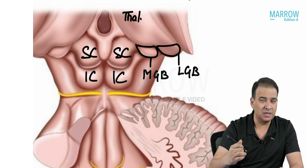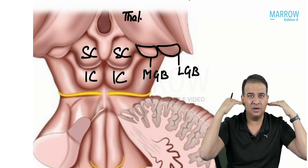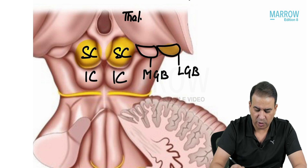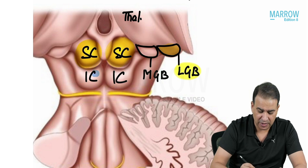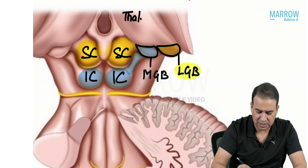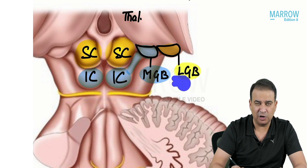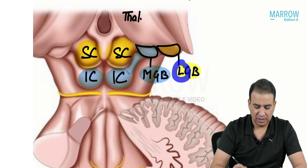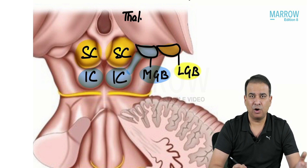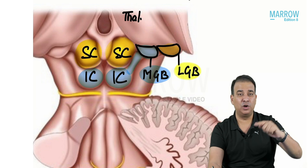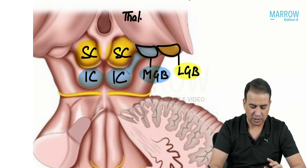Superior colliculus is for the visual pathway and is connected to the lateral geniculate body — remember, lateral not medial. Inferior colliculus is for the auditory pathway and is connected to the medial geniculate body. A useful mnemonic: L for light — lateral geniculate body, visual pathway; M for music — medial geniculate body, auditory pathway. So lateral geniculate body connects to superior colliculus, and medial geniculate body connects to inferior colliculus.